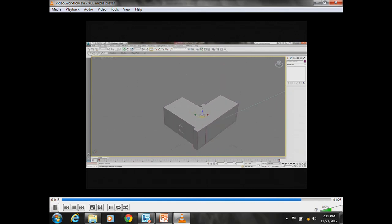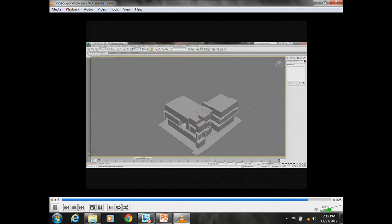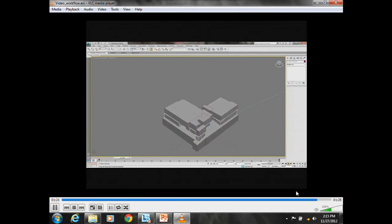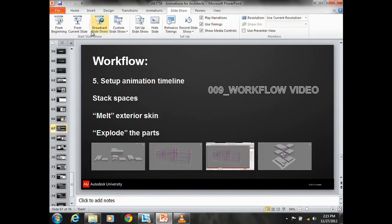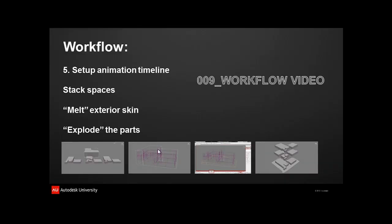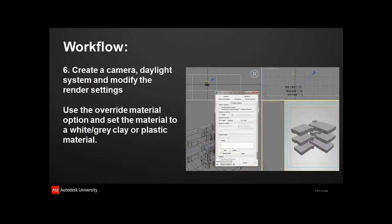So if we scrub forward and backwards you see the motion — the skin melting down and all those pieces exploding up. This ended up being about a three or four minute animation to go through each of the buildings, plus a flyby of the whole campus. What we rendered was the flyby, then each building doing the melting skin and exploding up. For the colors, we went into post-processing — that basically allowed us to limit the amount of things we needed to render.